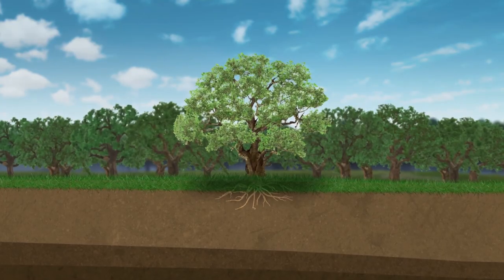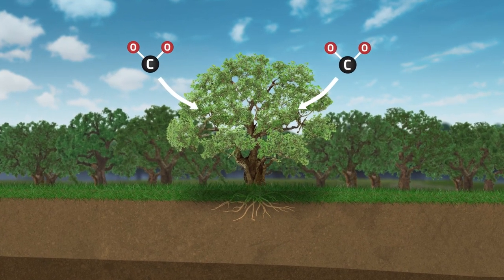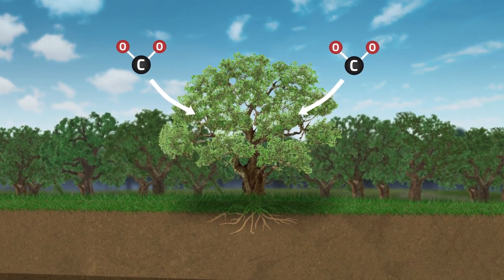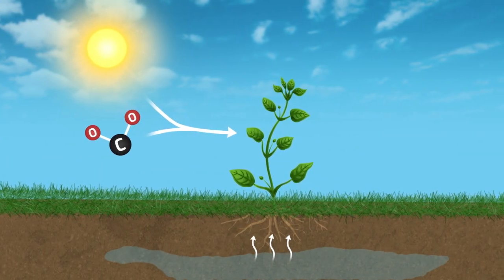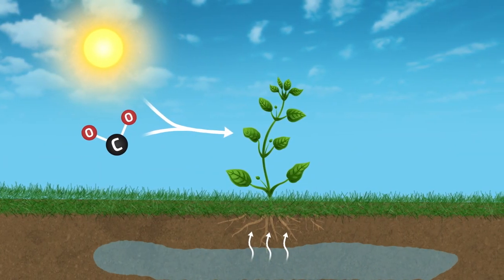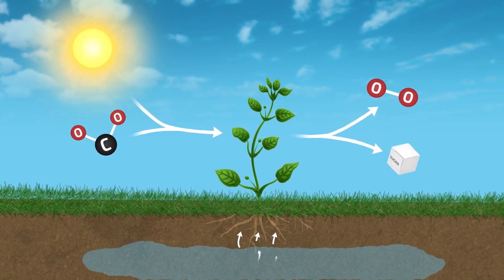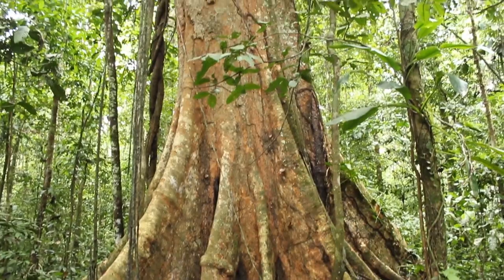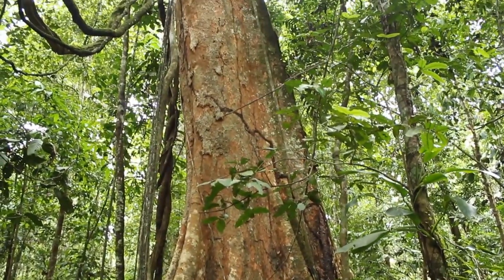On land, most carbon is stored in forests. Here, plants absorb carbon dioxide from the atmosphere into their cells. With energy from the sun, plants combine carbon dioxide and water to form carbohydrates, such as sugar, and oxygen through photosynthesis. In this process, carbon dioxide is converted to carbon-based cellular material.